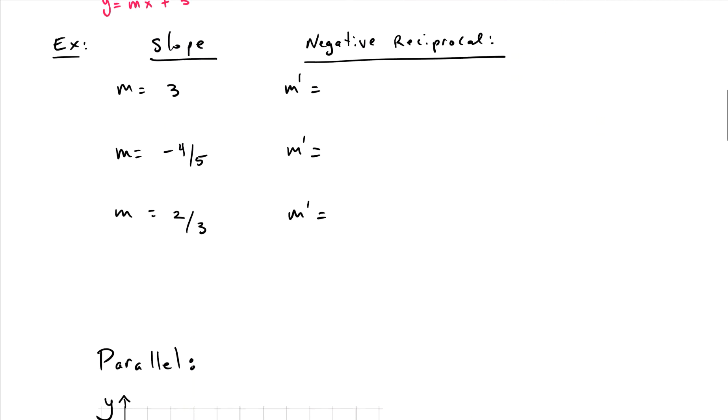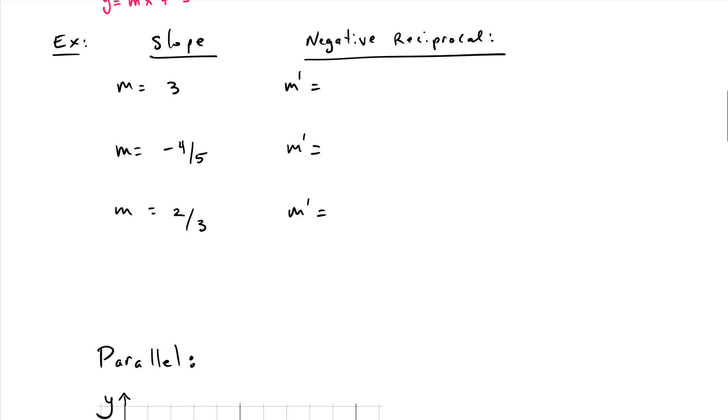So if we look at a slope here, say m equals three, its negative reciprocal is—you take three and you flip it. So you can think of this as three over one. You flip it and you get one-third, and then you make it negative because it started out to be positive. So you flip it and change the sign.